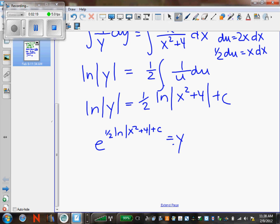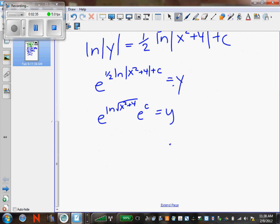Now, how do I simplify that? This is e raised to the natural log. Now I'm going to make that the square root. And then I'm going to say times e to the c. Well, e to the c is another constant. I'm going to change it to big C. e raised to the natural log of anything is the anything. So that's what my y will equal.